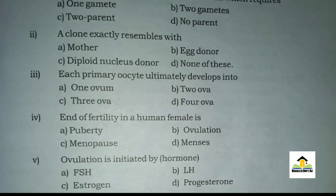MCQ number five: Ovulation is initiated by hormone — A: FSH (follicle stimulating hormone), B: LH (luteinizing hormone), C: estrogen, D: progesterone. The right answer for this MCQ is B: LH.